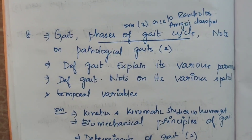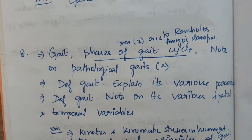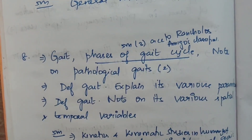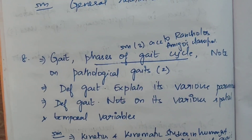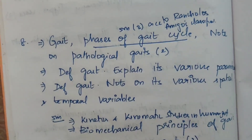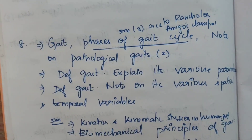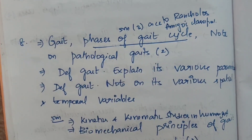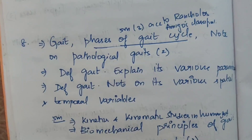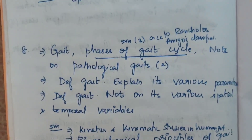Eighth topic is gait-related. In 15-mark questions: define phases of gait cycle, add a note on pathological gaits — appears 2 times. Next 15-mark question: define gait and explain its various parameters. Also: define gait and add a note on its various spatial and temporal variables.